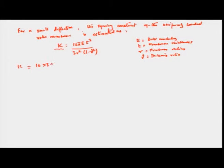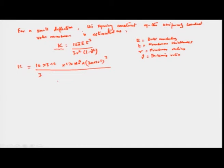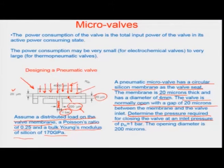Therefore, k equals 16 × 3.14 × 170×10⁹ Pa (bulk modulus) × (20×10⁻⁶ m)³ (cube of thickness t = 20 microns), divided by 3 × R² where R is 2 millimeters — because the total diameter is 4 mm, so radius is 2000 microns or 2 mm.